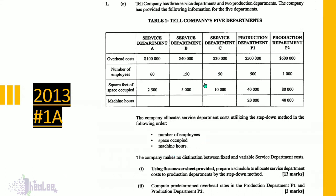In our previous lesson, we used the concept of percentages. To carry out a step-down method, you would start with the department offering the highest percentage of service to another service department, and continue in that order until costs are distributed. If you missed that lesson, the link is in the description below. The company makes no distinction between fixed and variable service department costs.